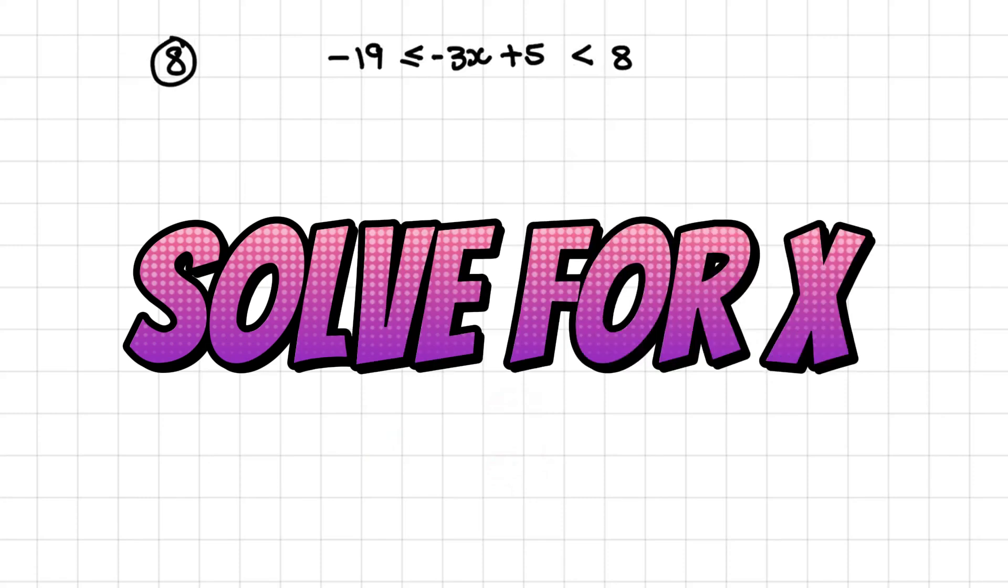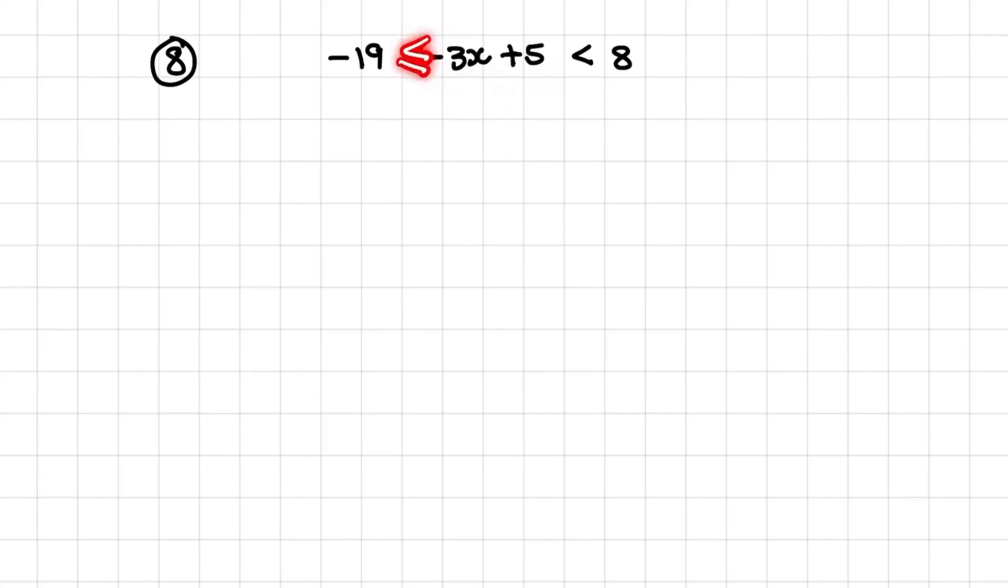And in our last example, we have negative 3x plus 5 is greater than or equal to negative 19, and negative 3x plus 5 is smaller than 8.